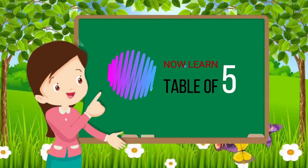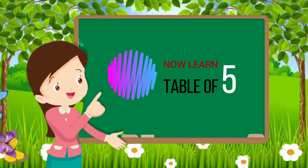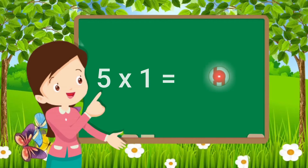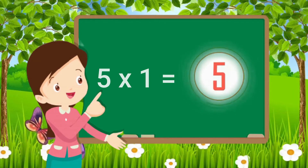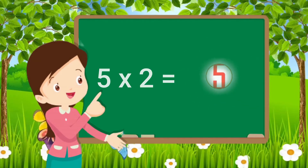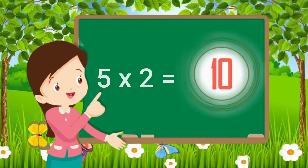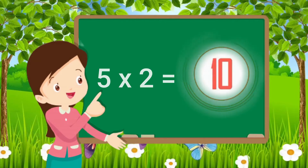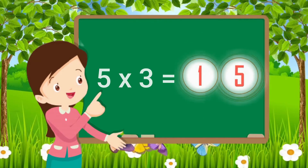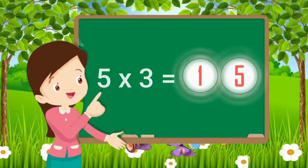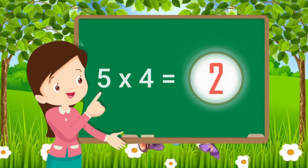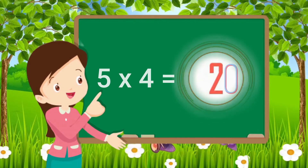Now learn table of five. Five ones are five. Five twos are ten. Five threes are fifteen. Five fours are twenty.